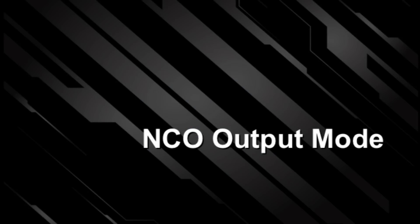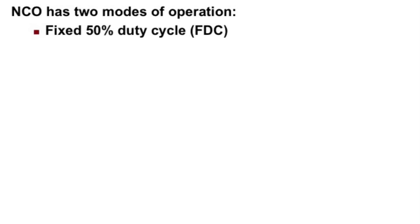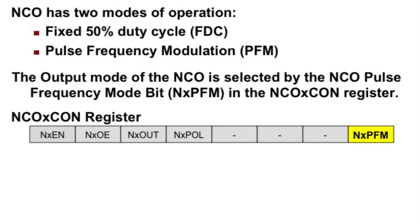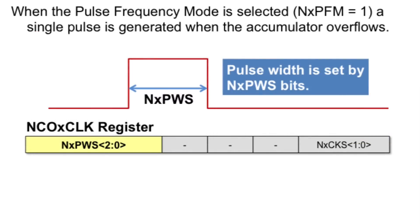Now we'll cover the NCO output mode. The NCO has two modes of operation: a fixed duty cycle mode and a pulse frequency modulation mode. The NCO pulse frequency mode bit in the NCO control register determines which mode the NCO module will operate in. A 1 enables the pulse frequency mode and a 0 enables the fixed duty cycle mode. When the pulse frequency mode is selected — the N-PFM bit equals 1 — a single pulse is generated on every accumulator overflow.